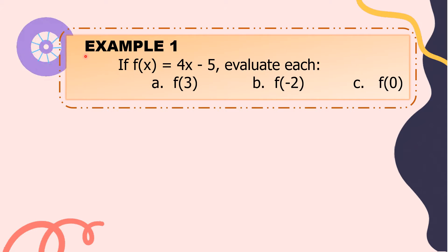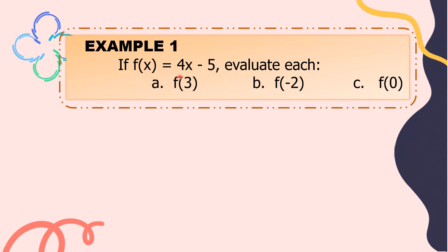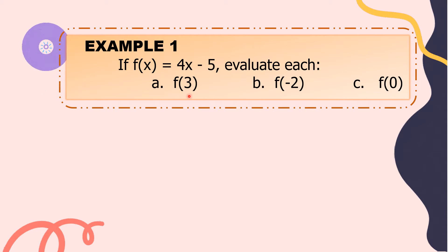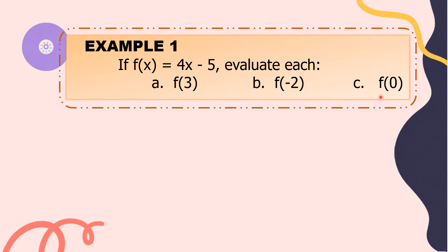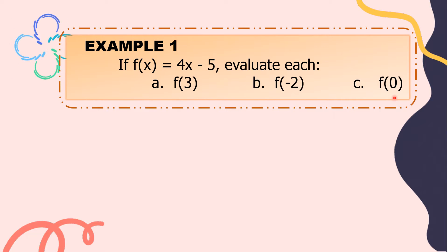Let's have example number 1. If f of x equals 4x minus 5, evaluate each. For letter A, we have f of 3, meaning the value of x is 3. Letter B, f of negative 2 — the value of x is negative 2. Letter C, f of 0 — the value of x is 0.